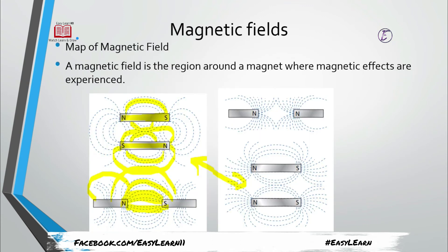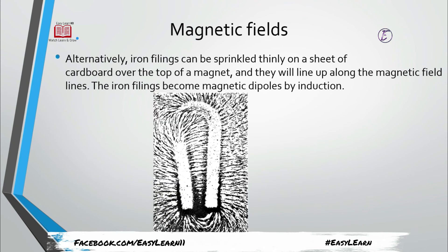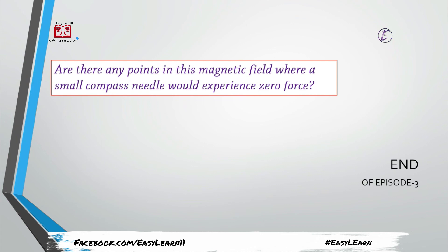There are two ways to draw magnetic field lines. The first is the compass method already explained. The second is to sprinkle iron filings on a sheet of cardboard placed over the magnet — the iron filings become magnetic dipoles by induction, a process discussed in the previous episode, and align themselves to reveal the field line pattern. This works for bar magnets and horseshoe magnets alike.